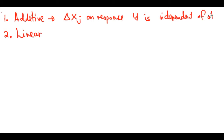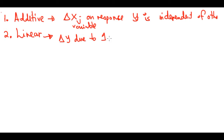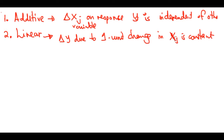For example, with TV, radio, and other budgets, we put our budget in TV and although radio is doing its own thing, we're ignoring what radio was really doing to some extent. The linear part assumes that the change in y due to one unit change in xj is constant — no matter the value of xj.